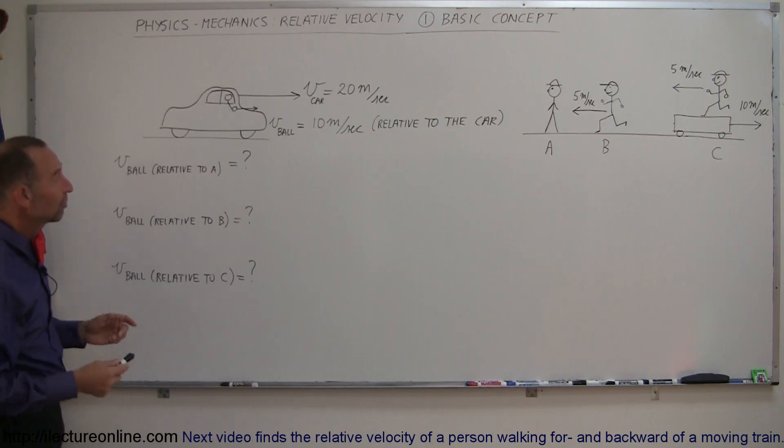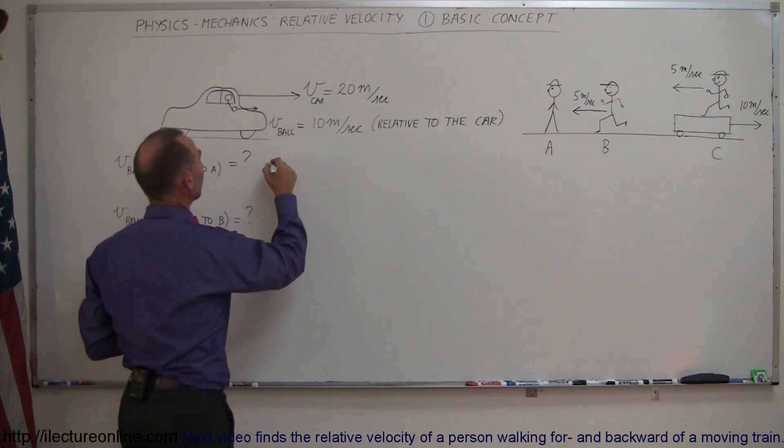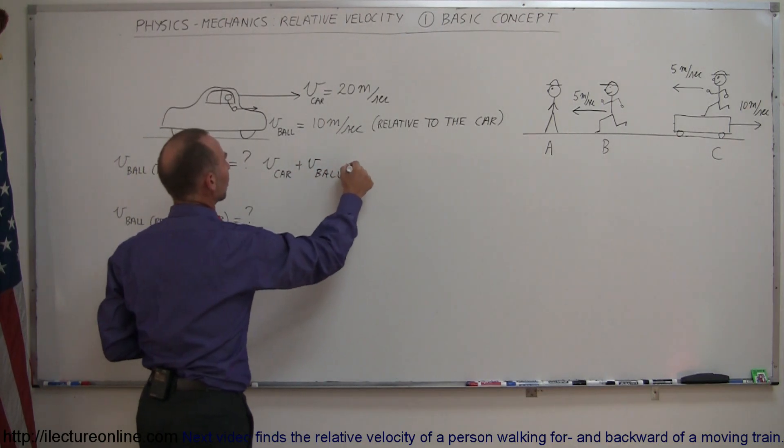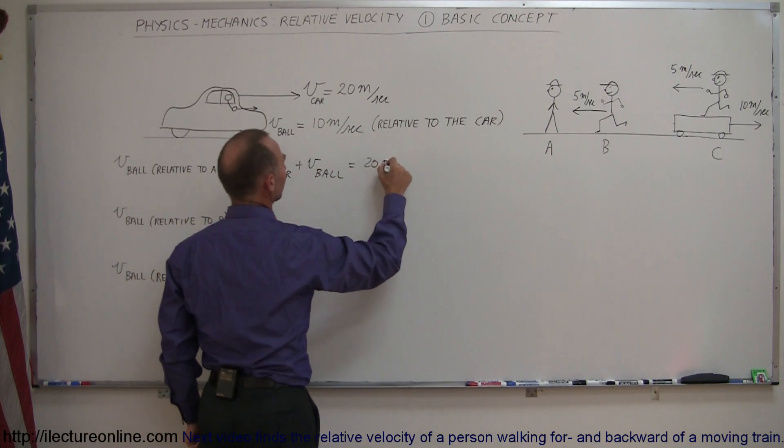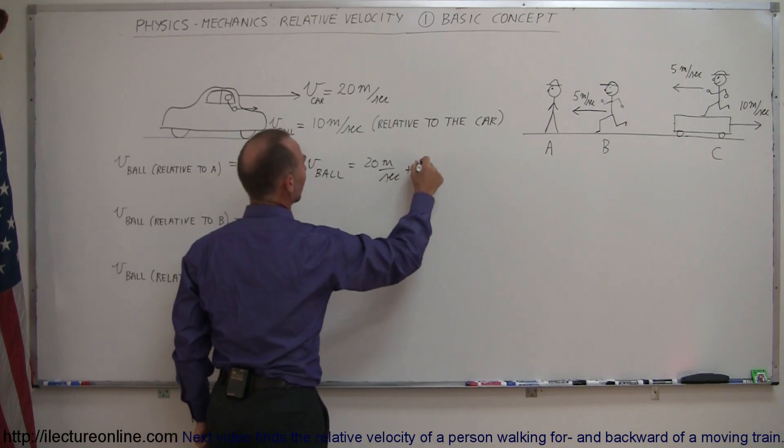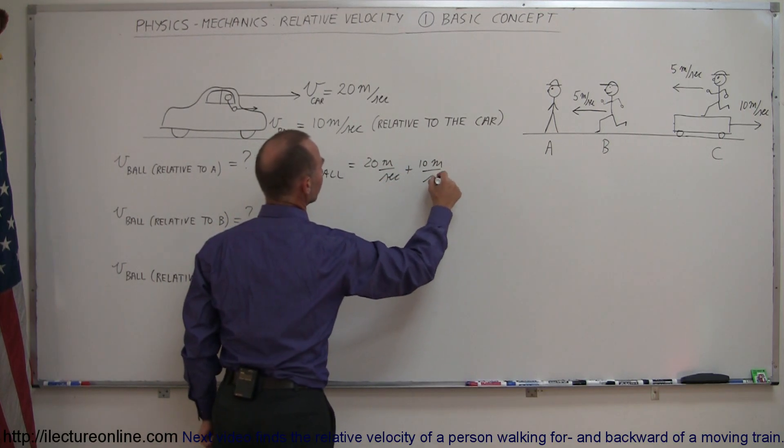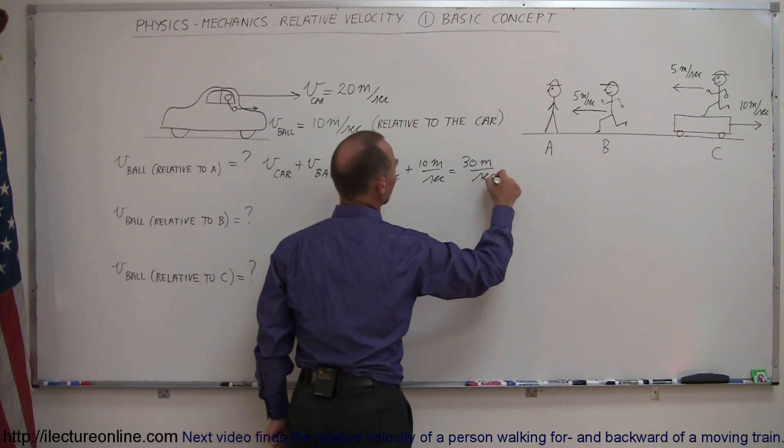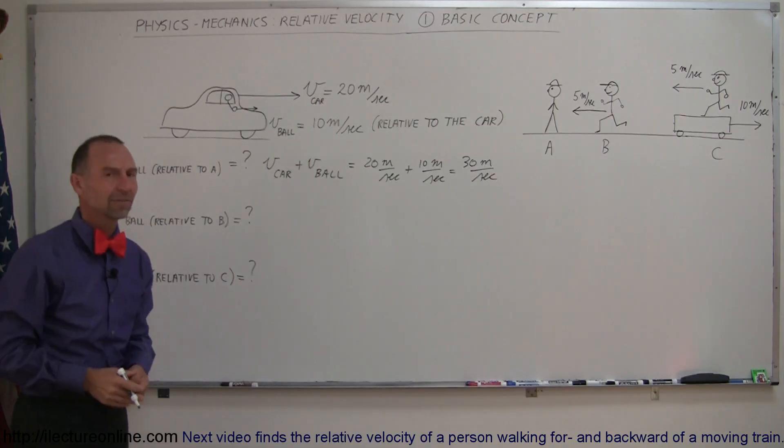Now relative to A is fairly straightforward. That's going to be equal to the velocity of the car plus the velocity of the ball. And so this is going to be 20 meters per second plus 10 meters per second, which is 30 meters per second. And that's pretty intuitive. We can kind of look at it and say, yeah, that makes sense.